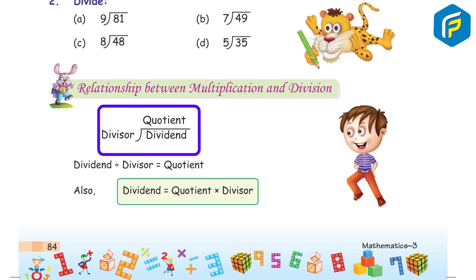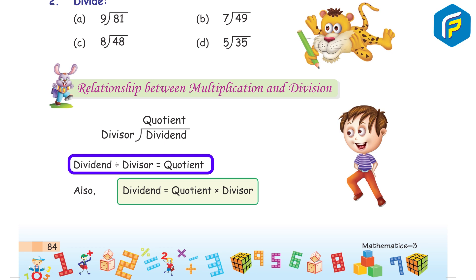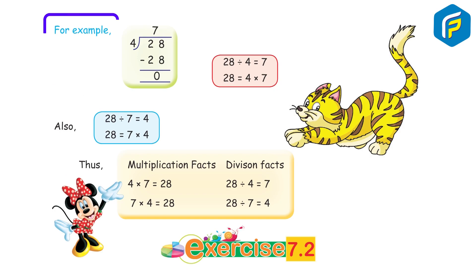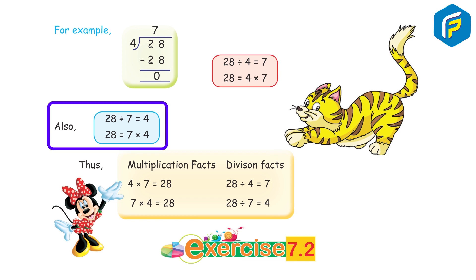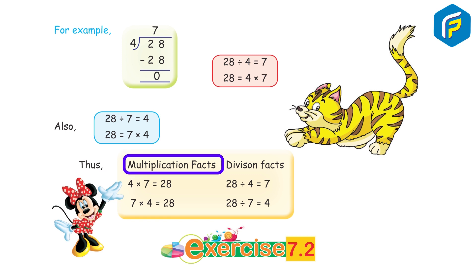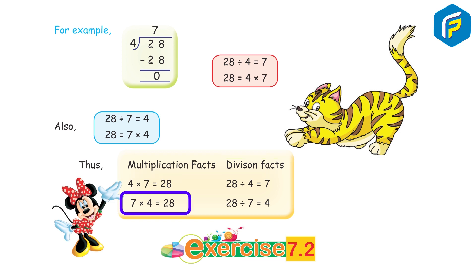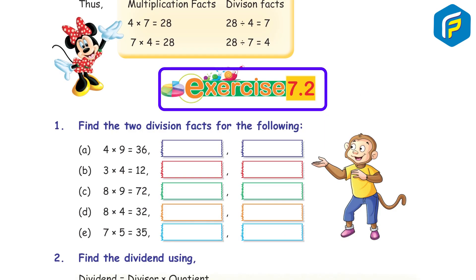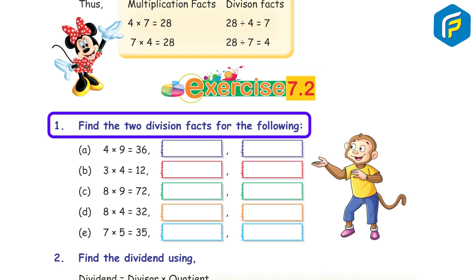Relationship between multiplication and division. Dividend ÷ divisor = quotient. Also, dividend = quotient × divisor. For example, 28 ÷ 4 = 7 and 28 = 4 × 7. Also, 28 ÷ 7 = 4 and 28 = 7 × 4. Thus the multiplication facts and division facts are: 4 × 7 = 28, 7 × 4 = 28, 28 ÷ 4 = 7, 28 ÷ 7 = 4.